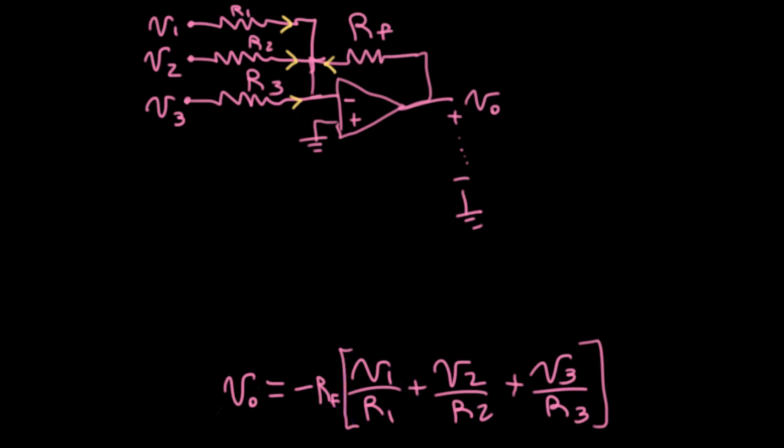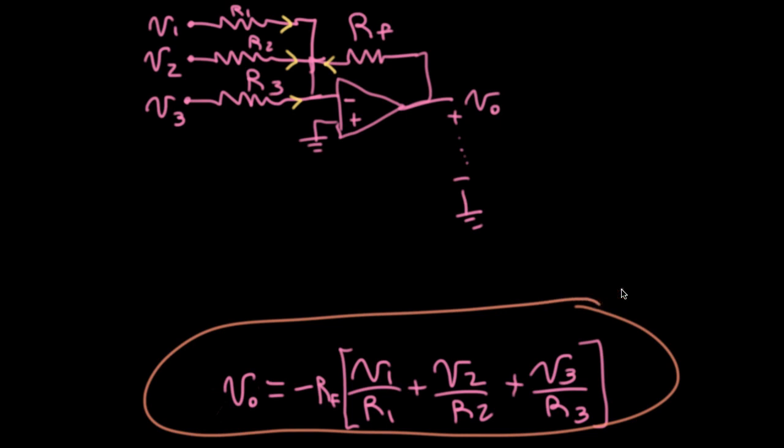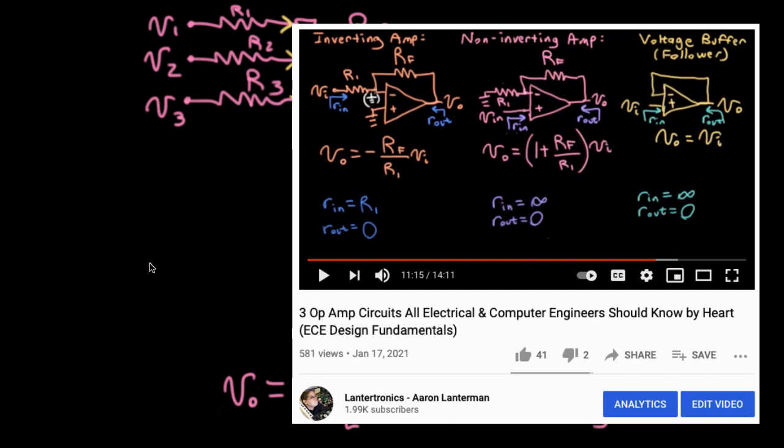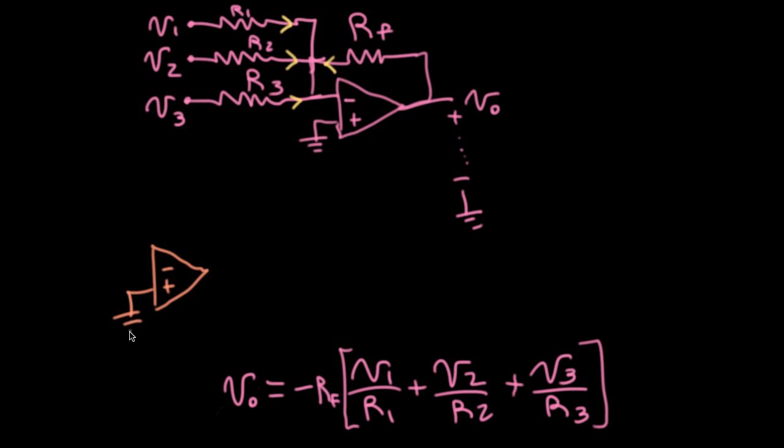Now, I don't actually have to pull out Kirchhoff's current law to come up with this formula. If we remember from our previous lecture about the three op-amp configurations all electrical and computer engineers should know by heart, we talked about the basic inverting configuration. I think I called this something like R1, and then we had an RF, and then we had our output here. I'm going to put a prime on the output so I don't get it mixed up with the output of this big mixer part that we have here, but I'll go ahead and call this V1.